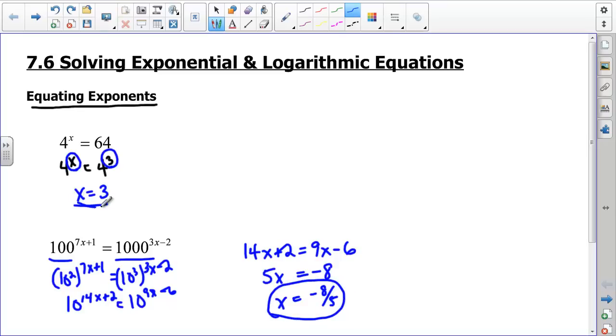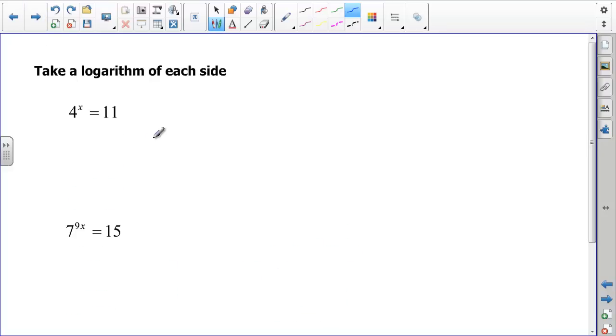So that's how we equate exponents. First we get similar bases, and then we set the exponents equal to one another. When we can't do that, for example, here we have 4 to the x equals 11. I can't put 11 as a base of 4. So what I'm going to do is take the log of both sides.